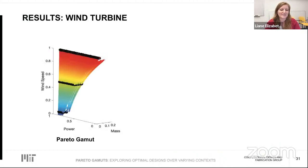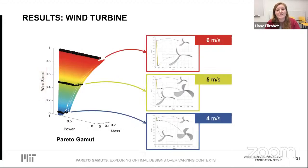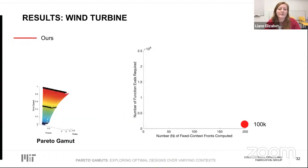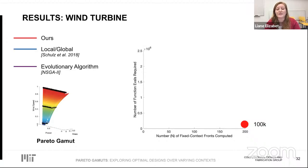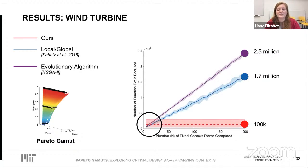For the turbine results, the Pareto fronts extracted from our gamut are indistinguishable from those found by fixed-context methods, suggesting our solution is both correct and high quality. Our method requires about 100,000 samples to output the equivalent of about 200 fixed-context fronts. Two state-of-the-art fixed-context methods require over an order of magnitude more function evaluations to reach the same density. Even for small values of n, the cost of repeatedly computing fronts rapidly exceeds the cost of our full Pareto gamut, suggesting our approach is feasible and relevant for engineers already exploring many contexts.